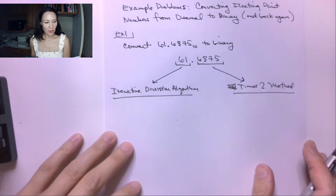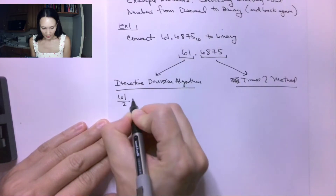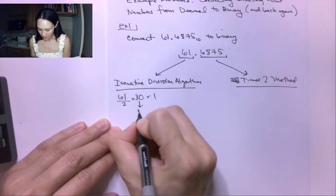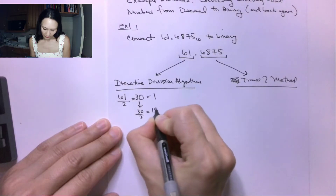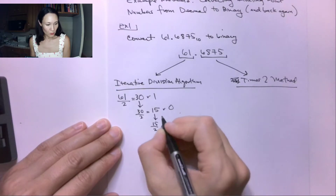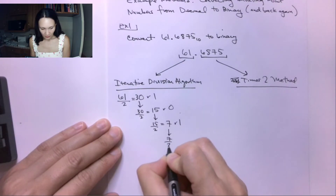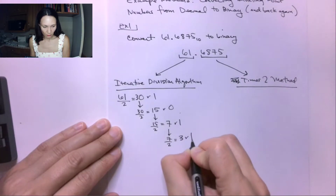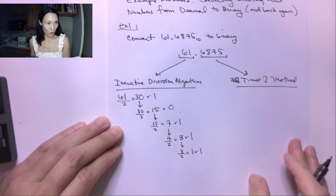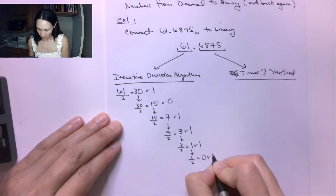So let's first do the whole number part using the iterative division algorithm. We take our 61 and divide by two, giving us 30 with a remainder of one. Then we take 30 and divide by two, giving us 15 with a remainder of zero. Then 15 divided by two gives us seven with a remainder of one. Seven divided by two gives us three with a remainder of one. Three divided by two gives us one with a remainder of one. Finally, one divided by two gives us zero with a remainder of one.